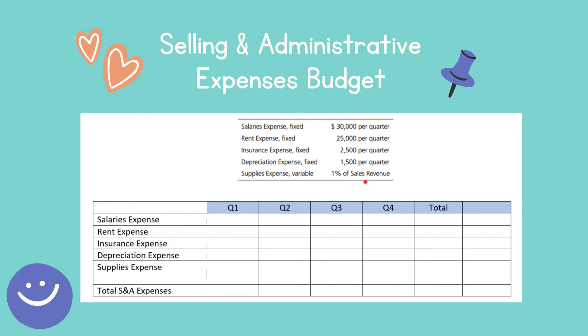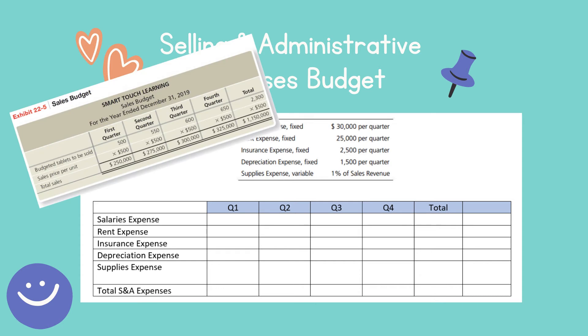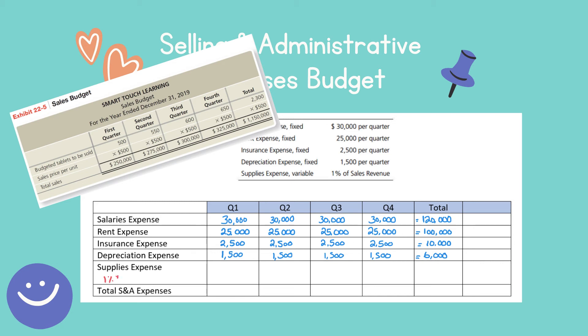I need to go back to the sales budget to get sales revenues. Salaries expense is $30,000 per quarter, rent expense is $25,000 per quarter, insurance expense is $2,500 per quarter, depreciation expense is $1,500 per quarter. For supplies expense, it's going to be one percent of sales revenue, so I need to multiply one percent by sales revenue.